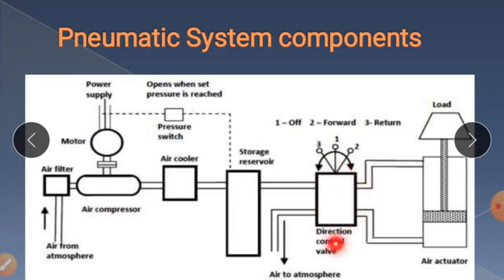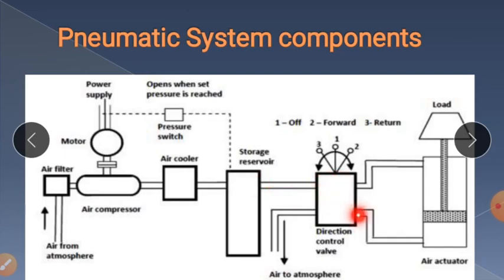The compressed air is then transmitted to the direction control valve, which controls the direction of the gas. If actuated in one direction, gas flows through the pipeline, is collected on one side, and pressurizes the piston to move downward. The collected gas is exhausted to the atmosphere. To raise the piston, the direction controller shifts the direction, air flows to the other side, pressurizes the piston to move upward, and the load is lifted. This is the process in pneumatic systems.